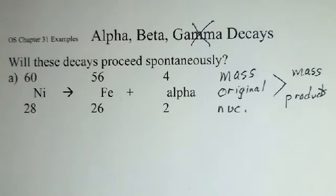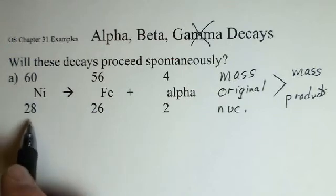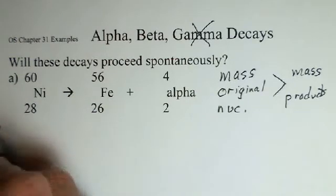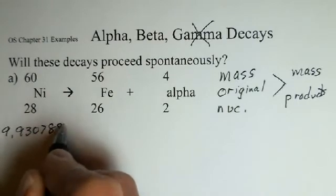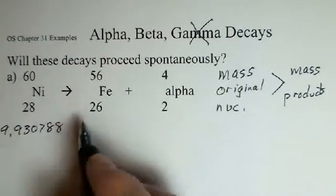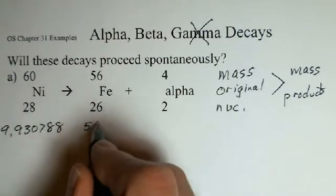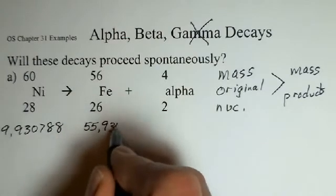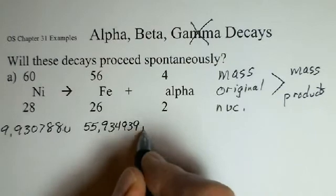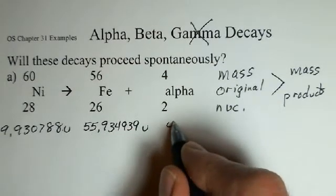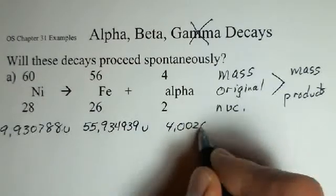So our situation is we need to go to a table and look up for this nickel-60, look up what the mass is, and we do that: 59.930788. For the iron-56, 55.934939, and these are in atomic mass units. The alpha 4.002603.